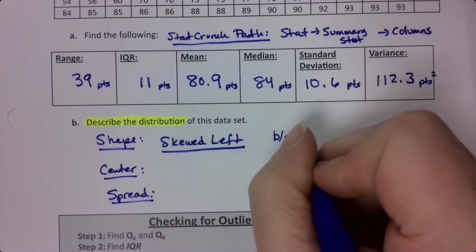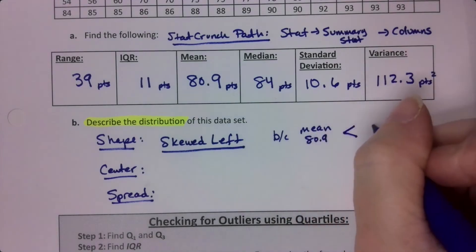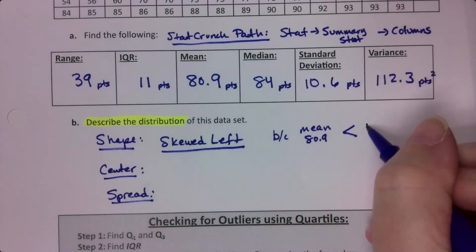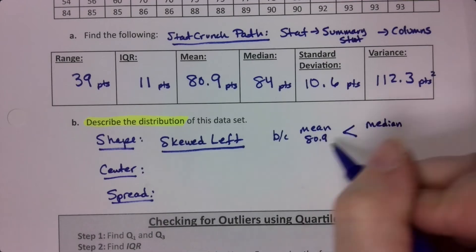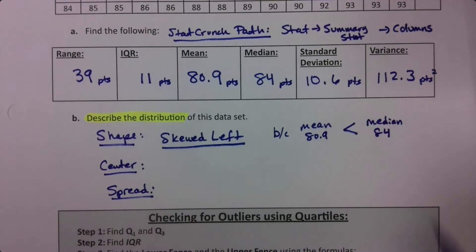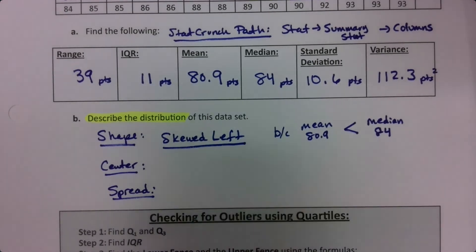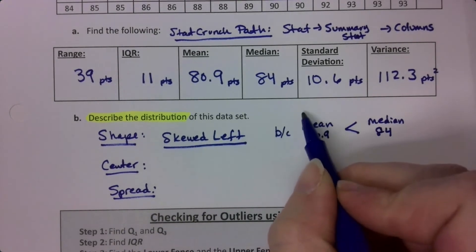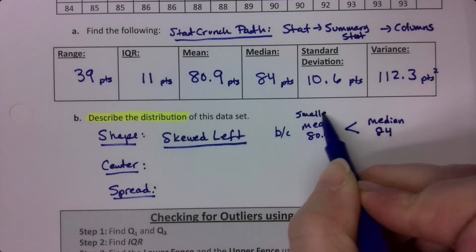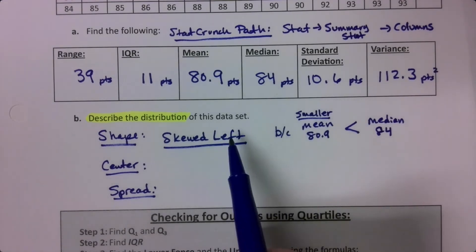The 80.9 is significantly less than the 84. So this is skewed left. Because the mean, which is 80.9, is less than, the pointy end faces it, the median. The monster eats the larger thing, which is 84. In my school, it was always alligators. I don't know why. I didn't live in Florida. I lived in Michigan. But nevertheless, that's what my teacher taught me. So mean is smaller. The mean is smaller. The mean is the one that gets pulled to the tail. So the mean is smaller, which makes it skewed left, which means there's a left tail.